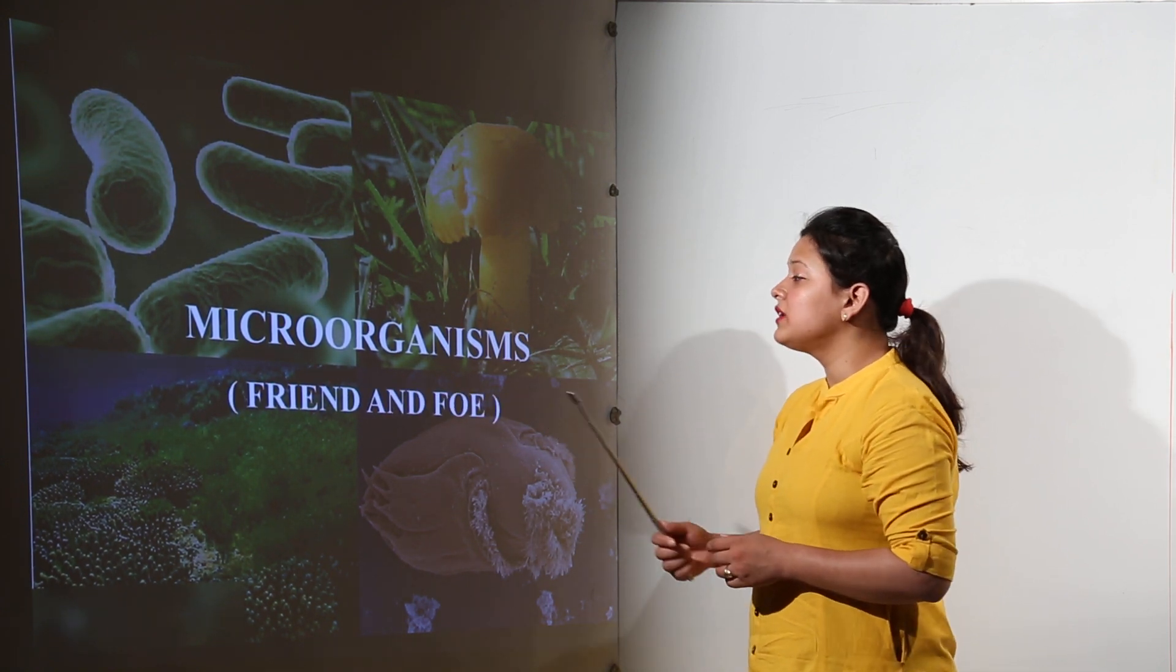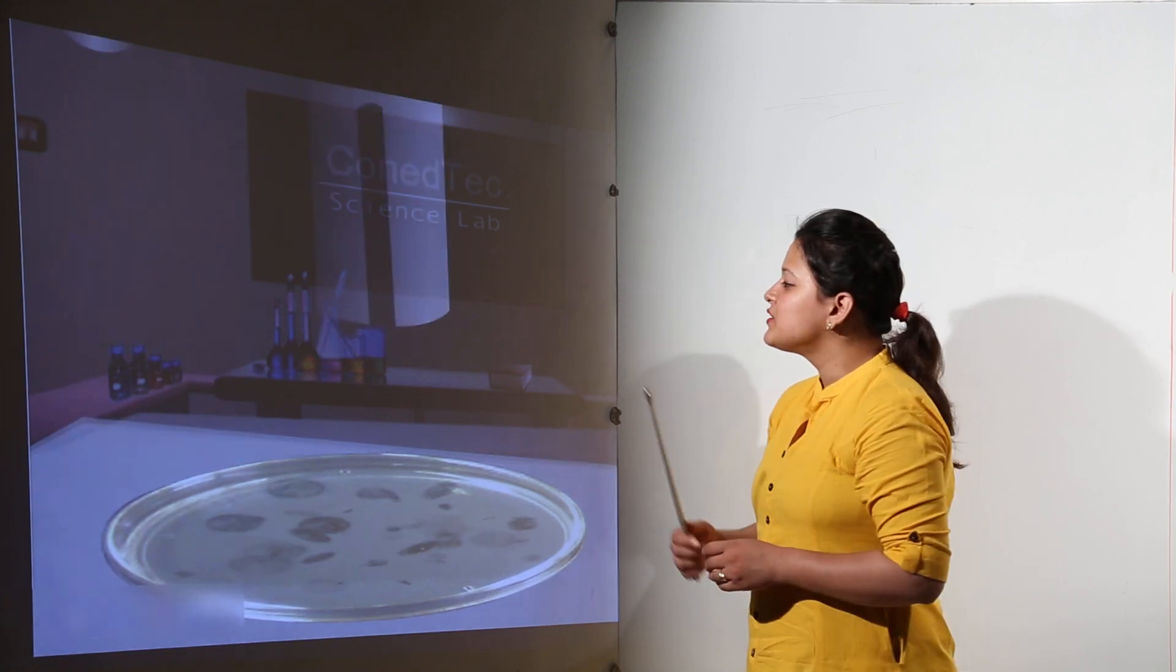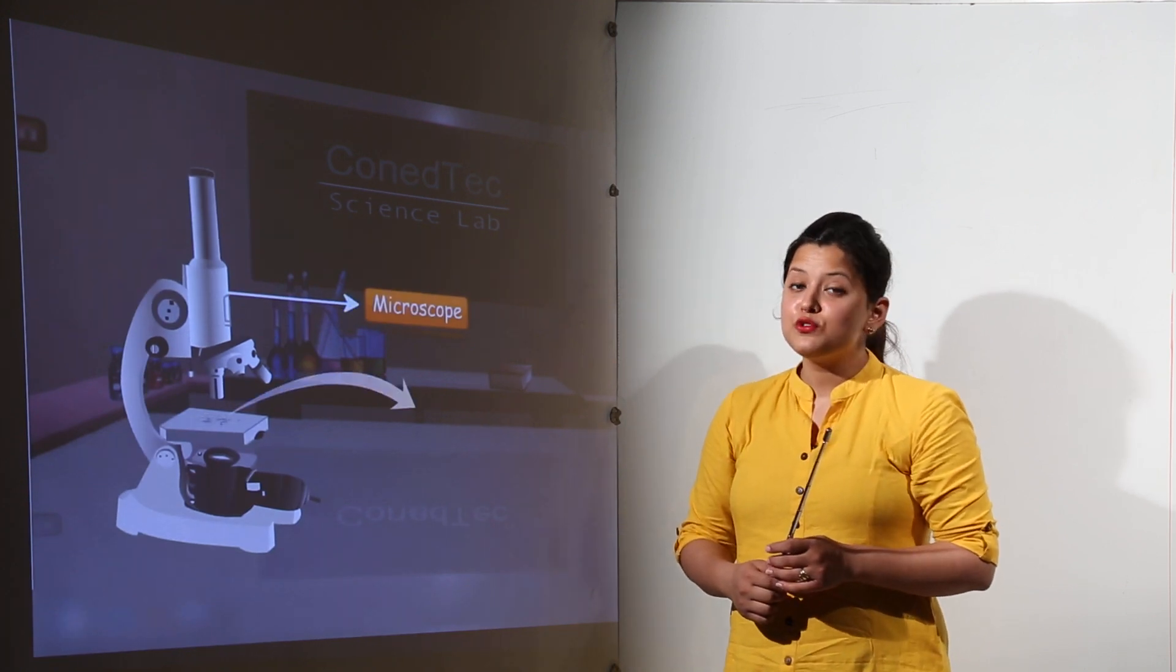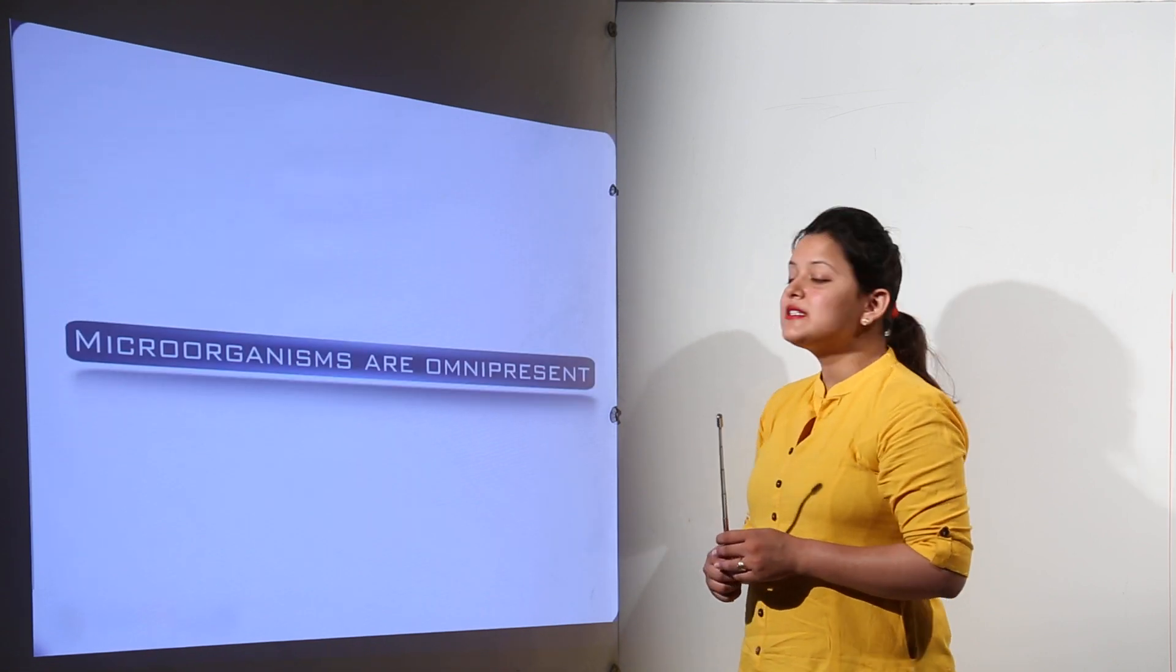Next we have the microorganisms that can be our friend as well as foe. So microorganisms can only be seen with the help of a microscope because they are too small to be seen with the naked eyes. They are also known as microbes.